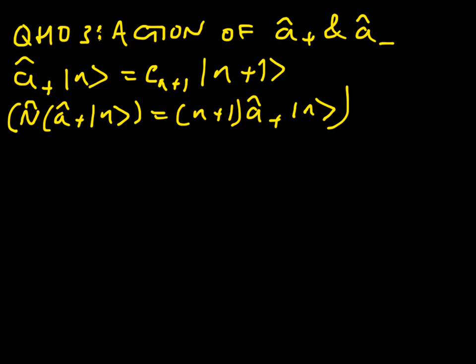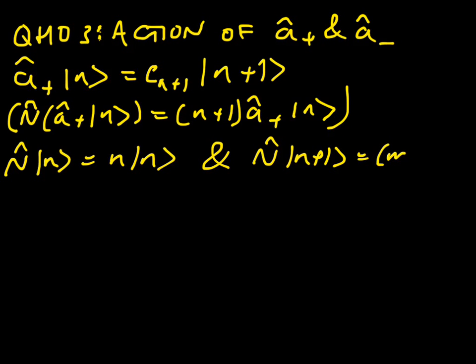Let's just note that we know that N hat acting on ket N gives us N times ket N, and N hat acting on ket N plus 1 is equal to N plus 1 ket N plus 1.